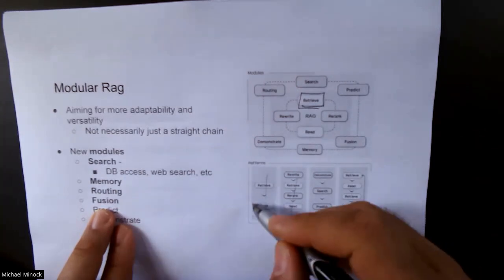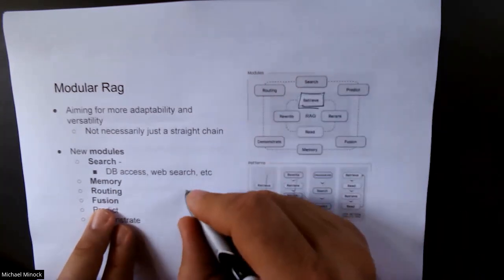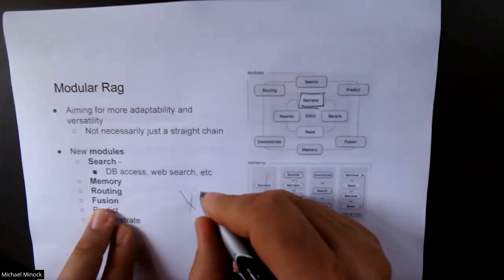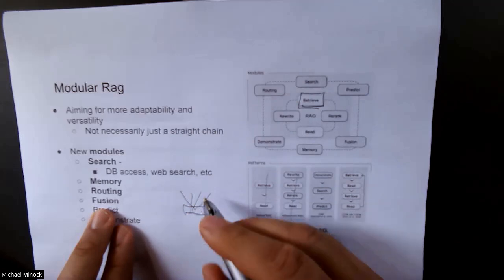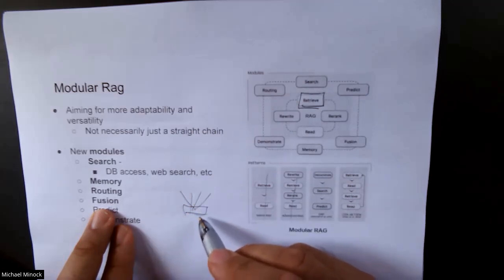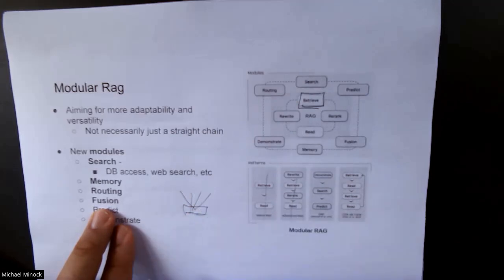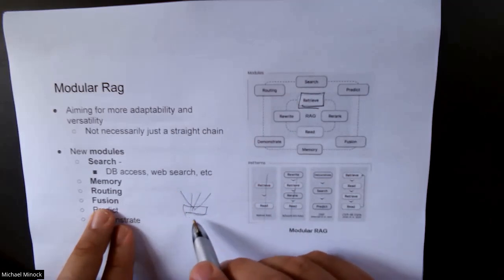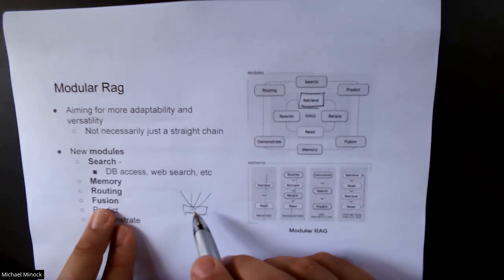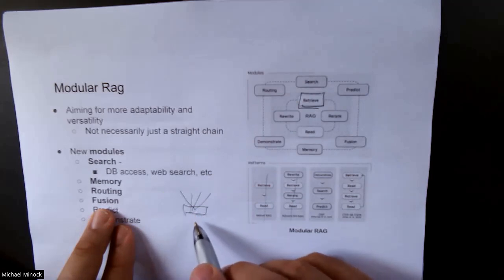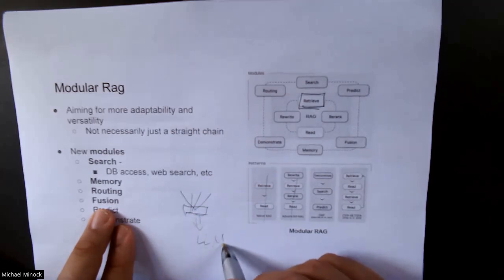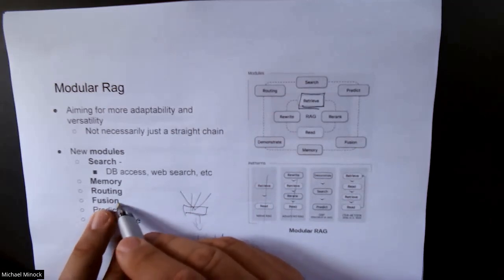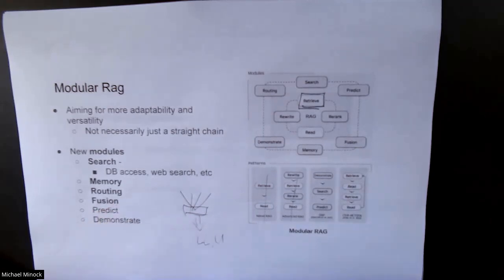The routing in modular RAG is much more complicated. The router might route a question to both a database retriever and a vector store retriever simultaneously. Documents might be in many different vector stores with different embedding models. The routing module can take a user question and send it to a single or multiple different retrievers at once.